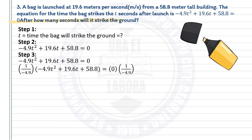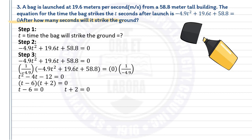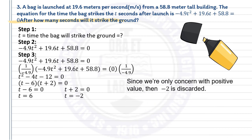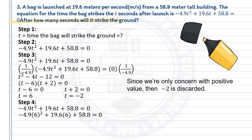Step 3: Proceed to the solution. Multiply both sides by negative 1 over 4.9 to make the leading coefficient equal to 1. This gives t squared minus 4t minus 12 equals 0. Next, factor: the factors are (t − 6)(t + 2) equals 0. Apply the zero factor property: t minus 6 equals 0 and t plus 2 equals 0. Simplifying, t equals 6 or t equals negative 2. Since we are only concerned with a positive value, negative 2 is discarded. Step 4: Do the checking — write the equation and substitute t equals 6.